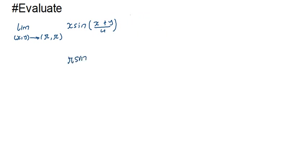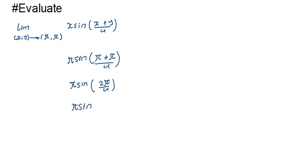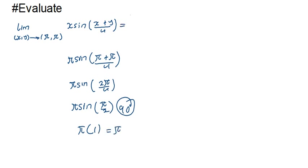Substituting x = π and y = π, we get π · sin((π + π)/4) = π · sin(2π/4) = π · sin(π/2). Since π/2 is 90 degrees and sin(90°) = 1, this gives us π · 1 = π. So the limit equals π.